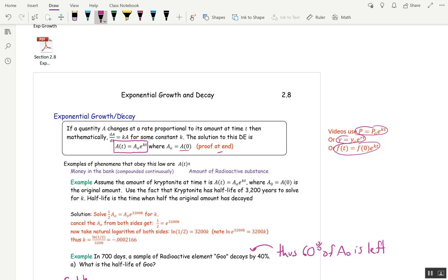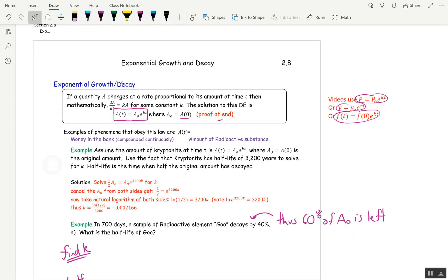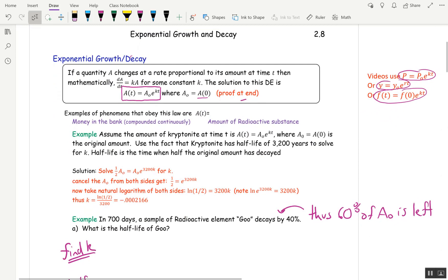Okay, so the first example, as you can see, I've done out for you, and we're going to do this type of calculation so often that it's really important you know how to do it. We're told the amount of kryptonite at time t is given by this formula that we talked about above. Use the fact that kryptonite has a half-life of 3,200 years to solve for k. Now there's a formula for half-life in your book, and I don't want you to use it. I want you to do everything by hand like I'm going to do here.